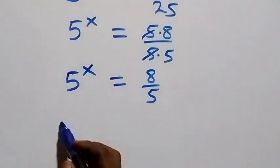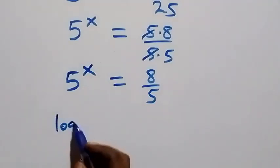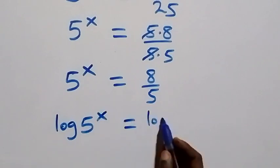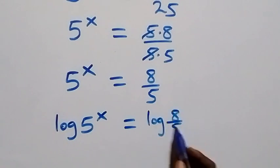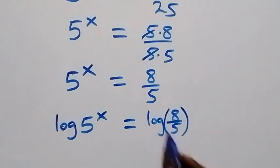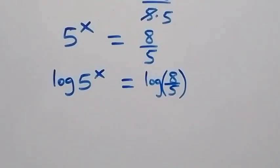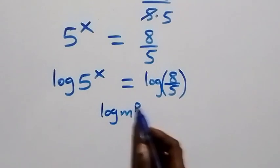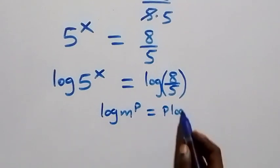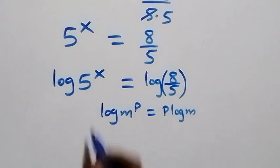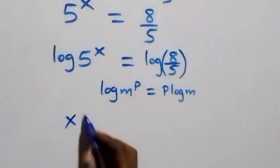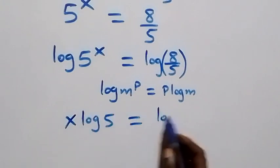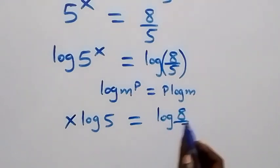We take the log on both sides: log of 5 raised to power x equals log of 8 over 5. Then we apply the power law of logarithms — log of m raised to power p equals p times log m — so this becomes x times log 5 equals log of 8 over 5.